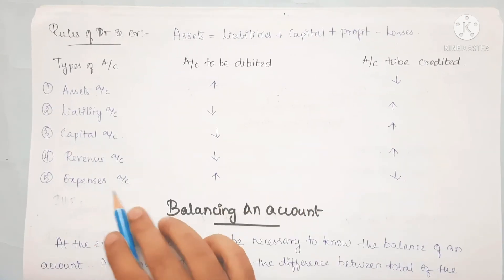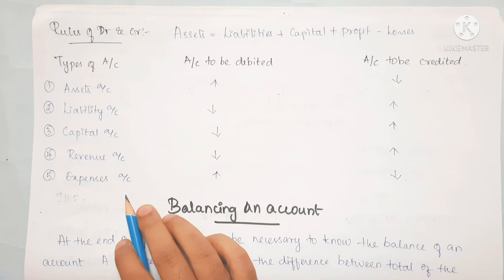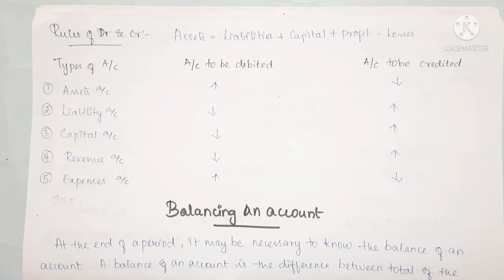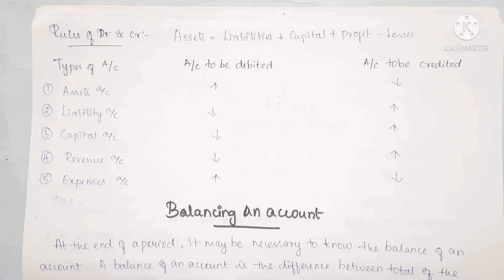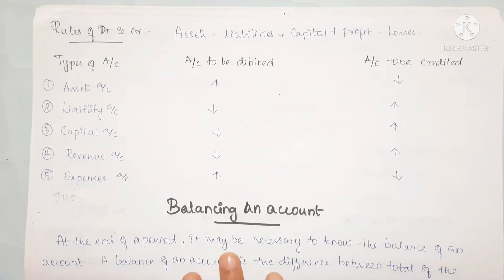For Expenses: examples include wages, salary, depreciation, and discount paid. For Revenue or Income: examples include discount received, interest received, and commission received. These are revenue accounts. In case of expenses - if expenses increase, we debit; if expenses decrease, we credit.